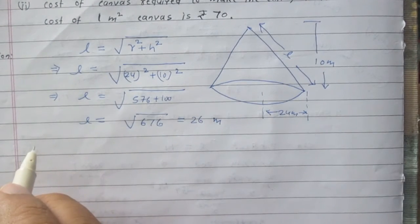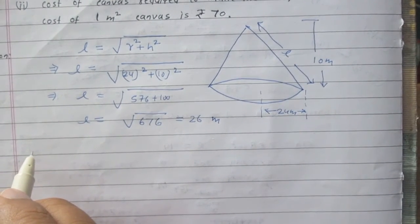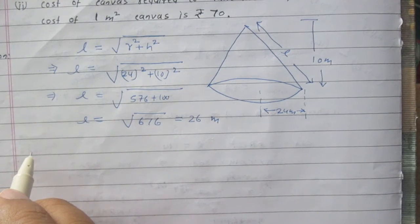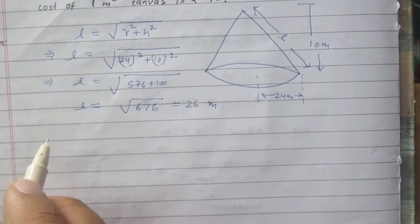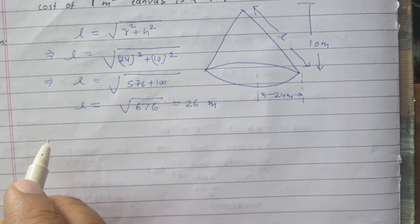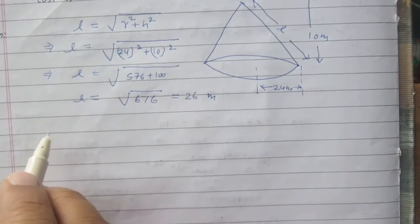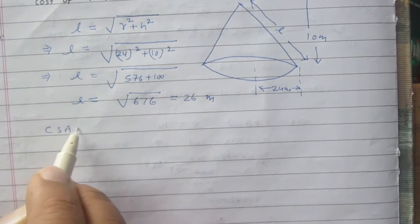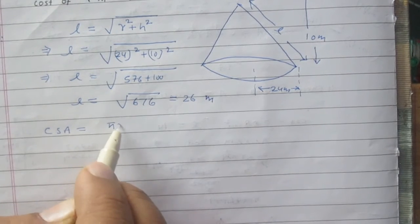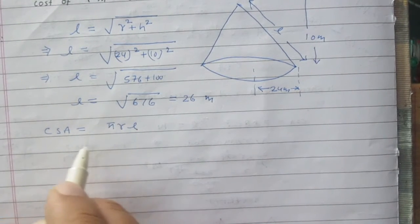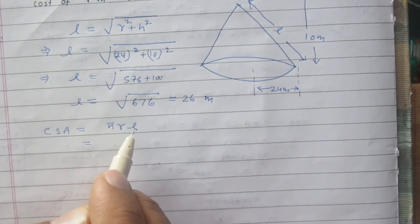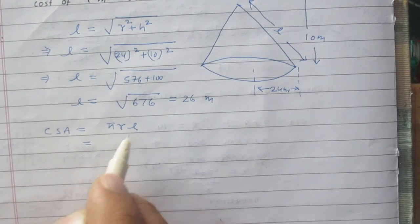Now, in second part we are to find the cost of canvas required. Let us find first the curved surface area of the tent. Curved surface area of this conical tent is pi r l, where r is the radius of the base and l is the slant height of the cone.